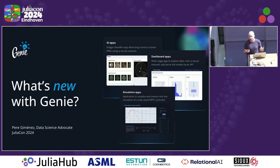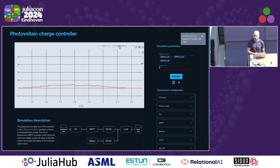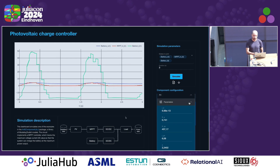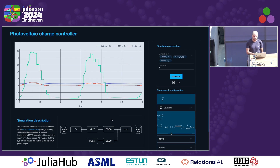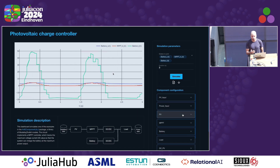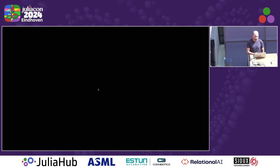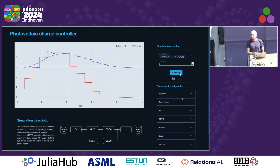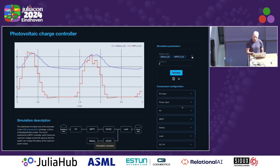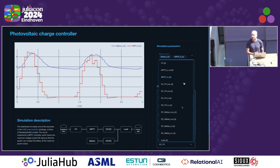Today I will bring you some new product updates that will make it easier and faster than ever to build data applications in Julia and Genie. For example, this application here has a dynamic system implemented with ModelingToolkit and a dashboard to run the simulation, explore the results, and set the parameters of the components in the dynamic circuit.